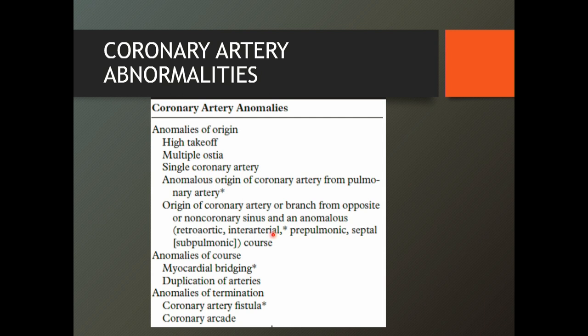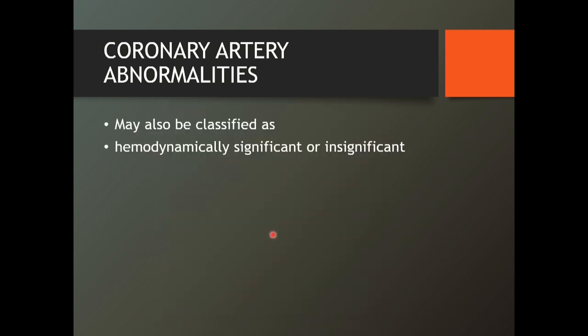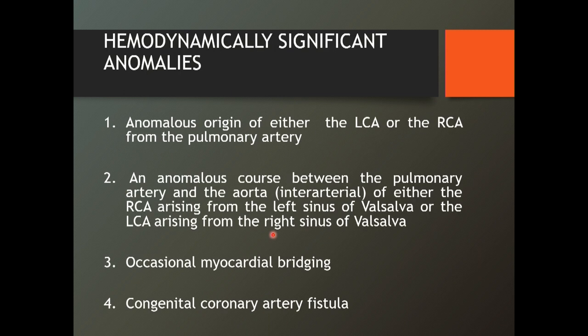Coronary artery anomalies of origin include high takeoff, multiple ostia, single coronary artery, anomalous origin of right coronary artery from pulmonary artery, and origin of coronary artery from the opposite or non-coronary sinus. The most important things for us are: anomalies of origin, the course of the anomalous artery, and myocardial bridging. They can be classified as hemodynamically significant — malignant — or insignificant — benign. Hemodynamically significant anomalies: anomalous origin of either the left or right coronary from the pulmonary artery is bad and hemodynamically significant.